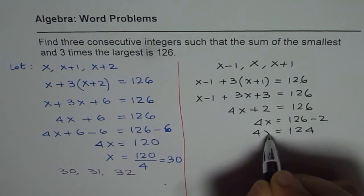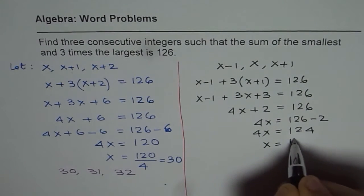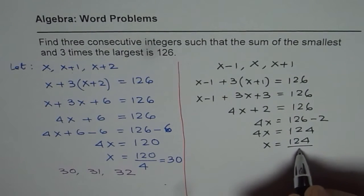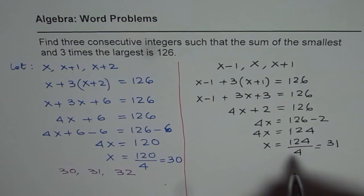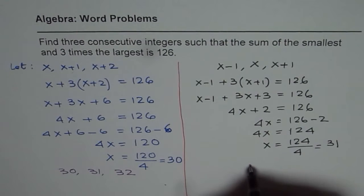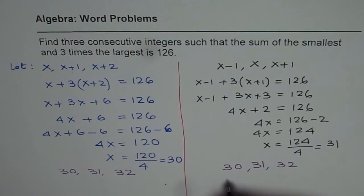So we get 4x equals 126 minus 2 which equals 124. So 4x is 124, x is 124 divided by 4 which is 31. So x is 31 this time for us. So that is the center number 31. So our solution is one more than 31 and one less than 31. So these are the same numbers.